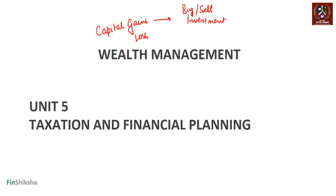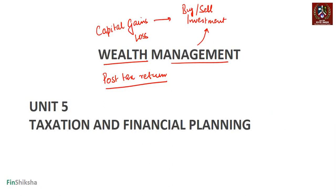When you are buying and selling an investment, if there is any money made, that's called capital gain; if there is any money lost, that's called capital loss. In wealth management, when clients buy and sell investments, what becomes very important is the post-tax return. The choice of investment and how long you hold it often depends on what taxation applies — that's where capital gains assumes paramount importance.